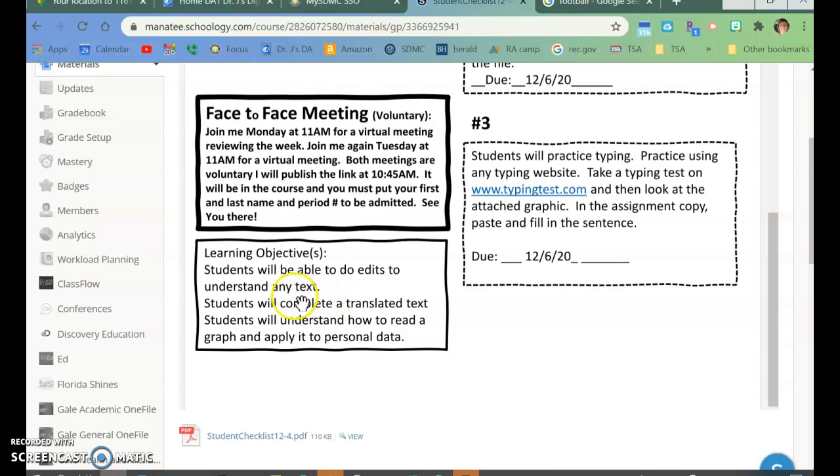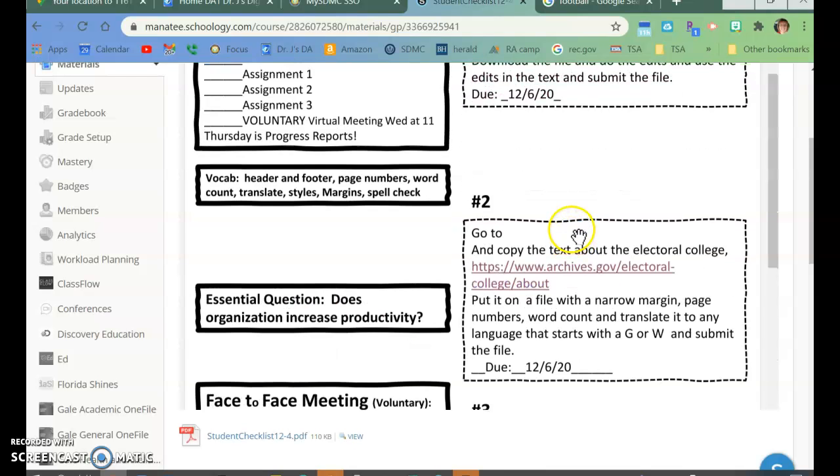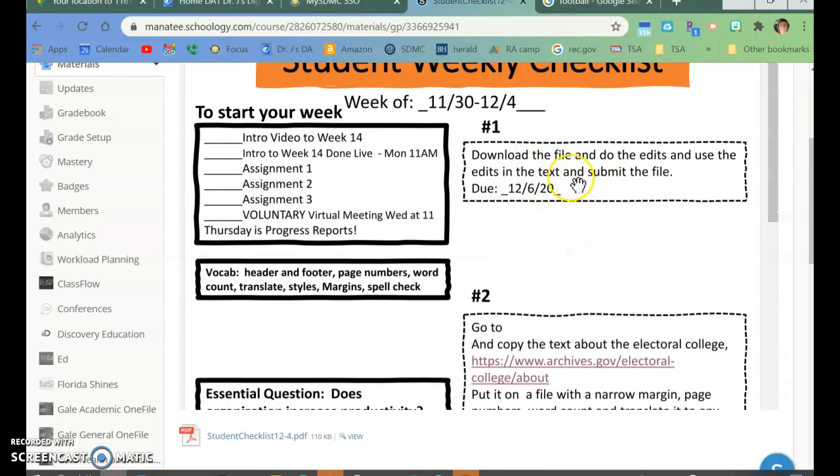Our learning objectives are about doing edits in text. You're going to be able to translate text, and then you're going to be able to read a graph and apply it to your performance. So assignment one is you're going to download a file, and then you're going to follow the video so that you can do several things to it. The two biggest ones that we're working on this week are spell check and translation, but we're also doing headers and footers and page numbers. So this one is basically using some more of the ribbons and learning the different edits that are possible.